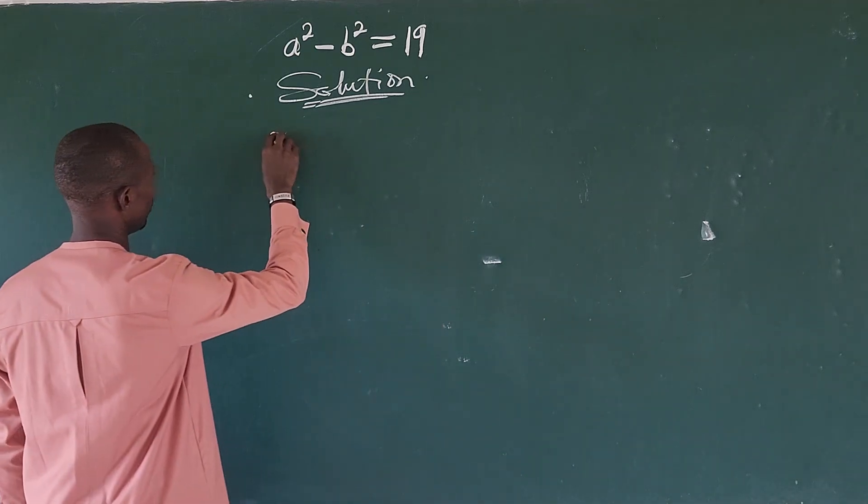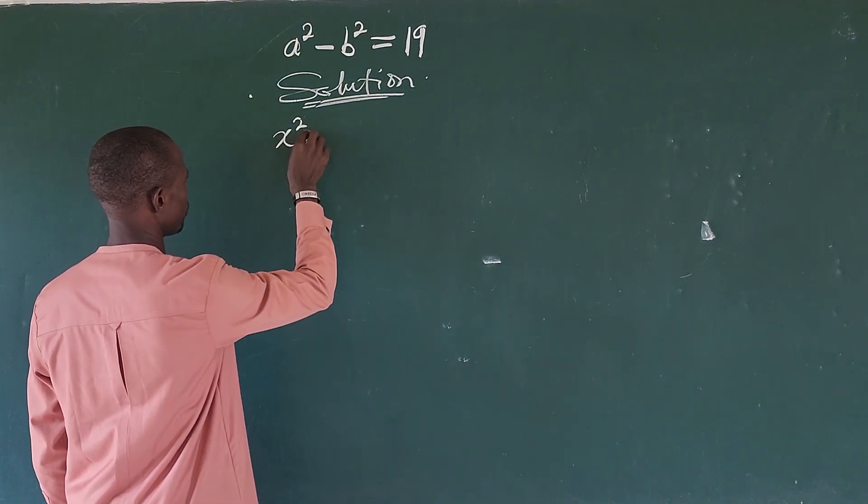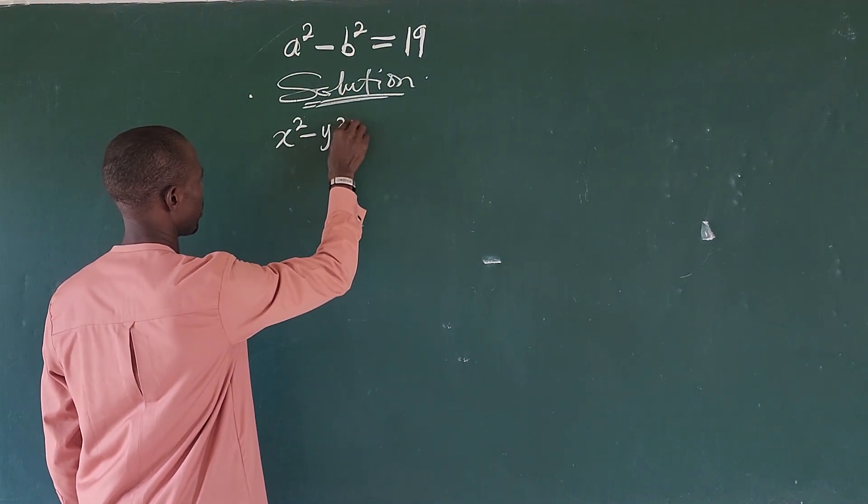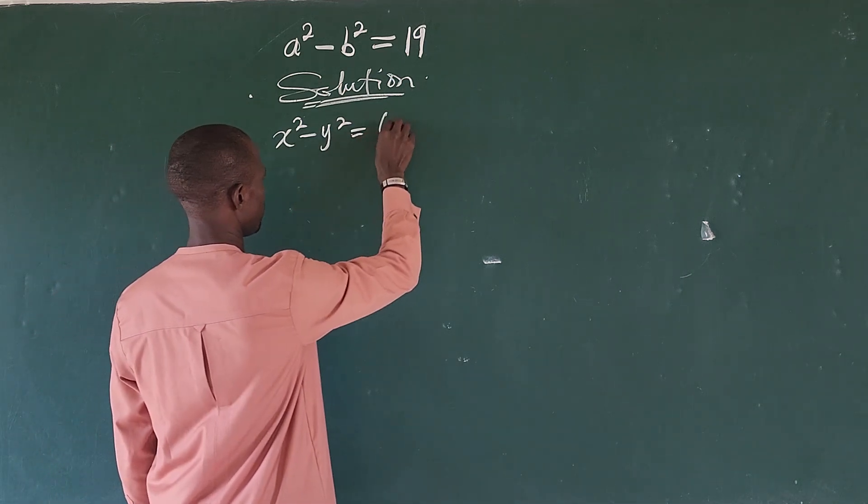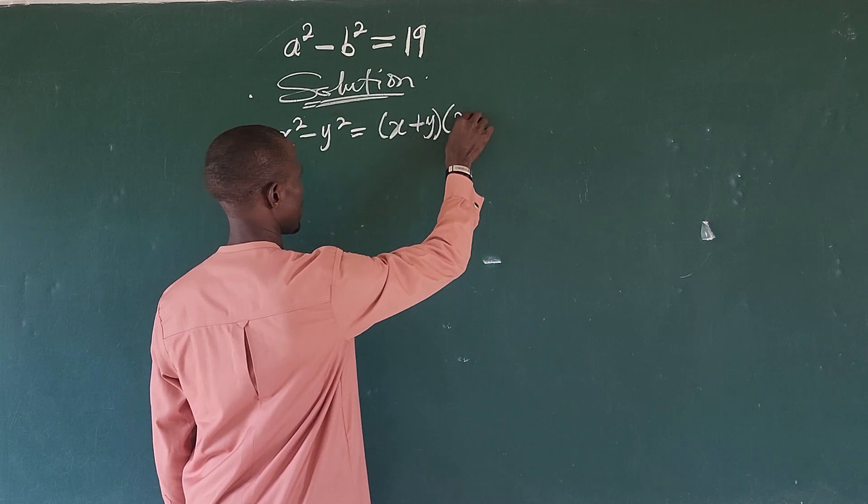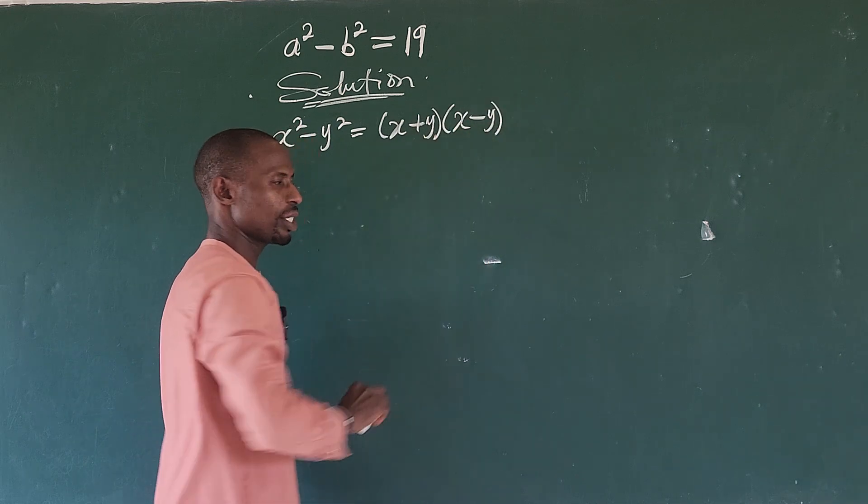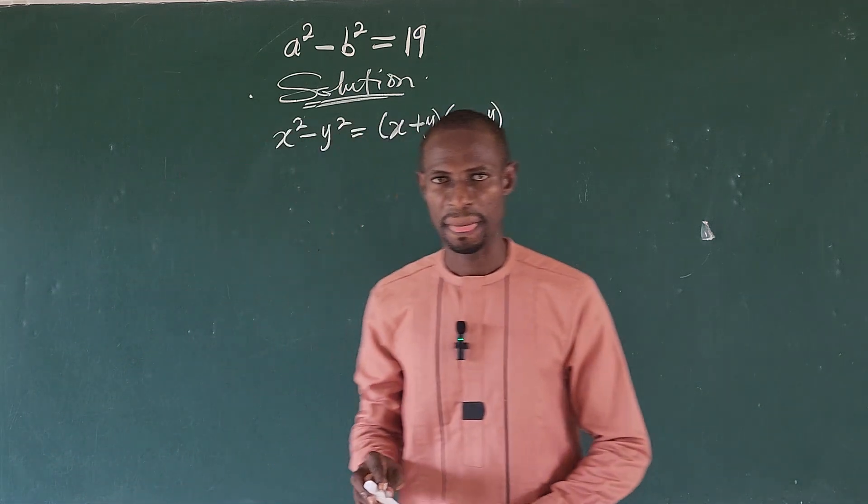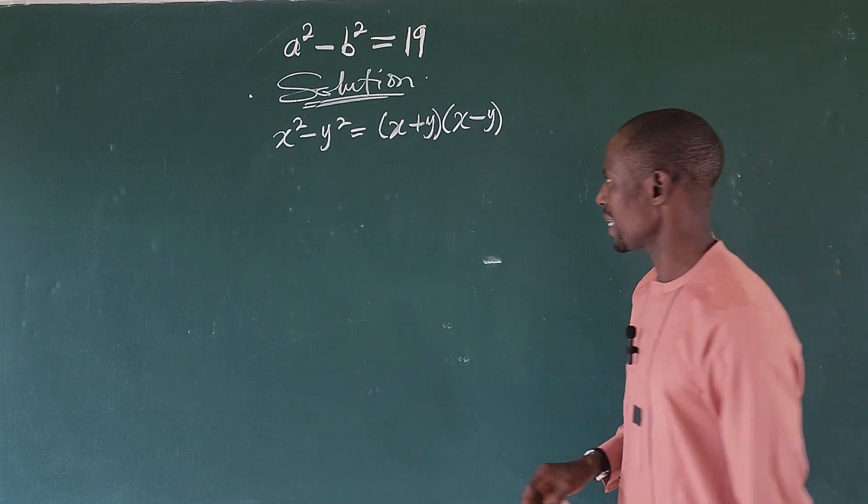It says that if you have x² - y², this is automatically equal to (x+y)(x-y). This is what we call the difference of 2 squared and I believe we are used to this algebraic identity.